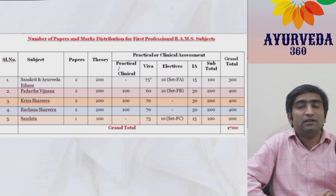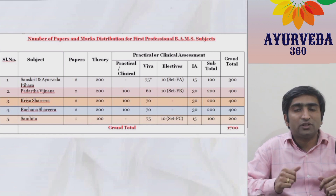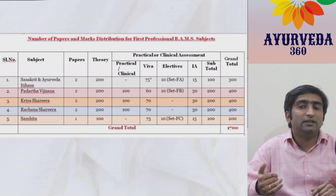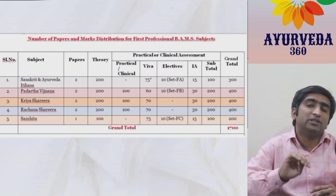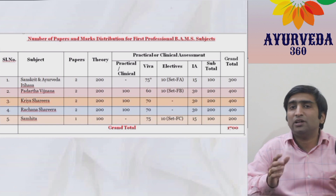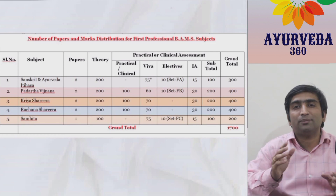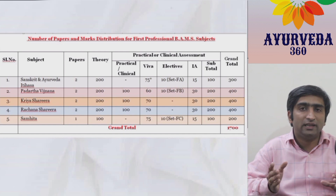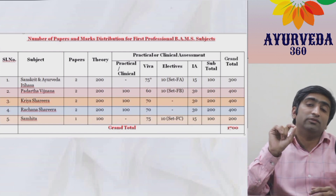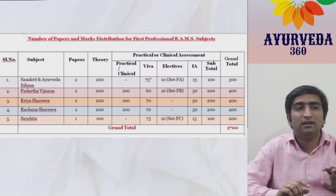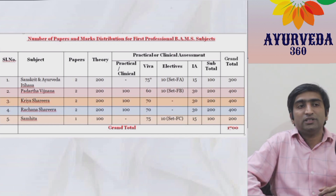When the total marks of each subject are combined, a first professional BAMS student faces the examination out of a grand total of 1700. The pass mark is 50% separately in theory and practical — they are not combined. For example, if a student scores 40 in paper one and 70 in paper two of Padartha Vijnana, the combined 110 out of 200 means the subject is passed. Similarly, a minimum of 50% is required in the practical part. Since internal assessment and elective marks are already known before the exam, students can gauge their preparation.